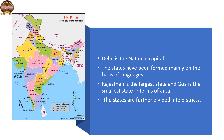Delhi is the national capital. The states have been formed mainly on the basis of languages. Rajasthan is the largest state and Goa is the smallest state in terms of area. The states are further divided into districts.